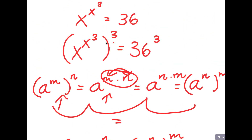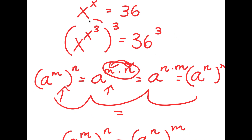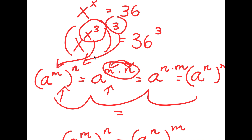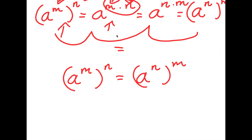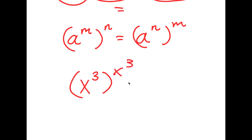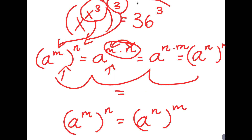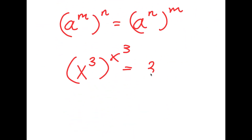So now coming back over here, we have x to the power of x to the power of 3 to the power of 3, is equal to 36 to the power of 3. And we can think of x to the power of 3 here as m and 3 as n. So now I can switch the places of these two, and I get x to the power of 3 to the power of x to the power of 3, and this is equal to 36 to the power of 3.